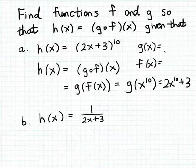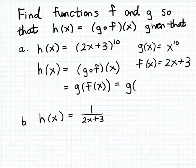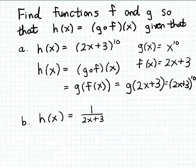Let's let g of x be x to the 10th power instead of 2x plus 3, and now let f of x be 2x plus 3. Let's see what happens when we compose g with f. So g compose f of x equals g of f of x. Now f of x is 2x plus 3, so we substitute 2x plus 3 into g. Then g of 2x plus 3 — substituting that quantity in for x in the formula for g — gives us 2x plus 3 raised to the 10th power. And that is the correct formula for h.